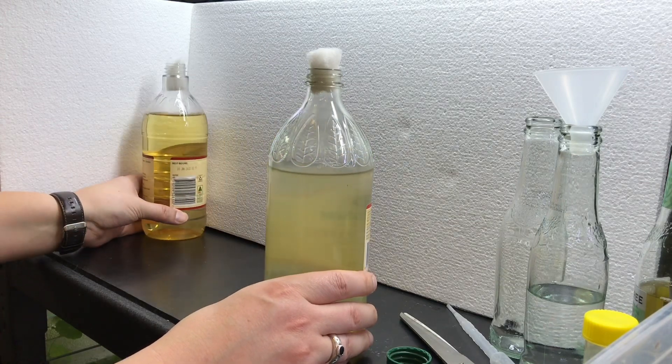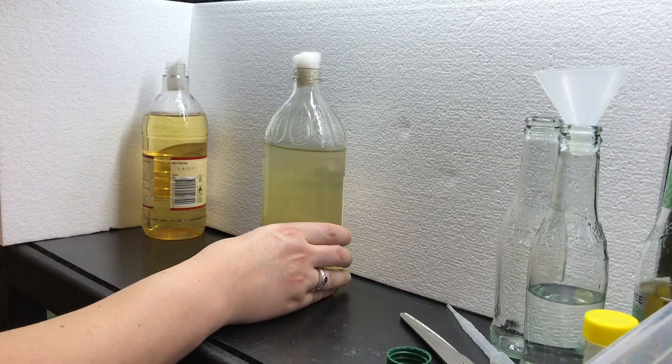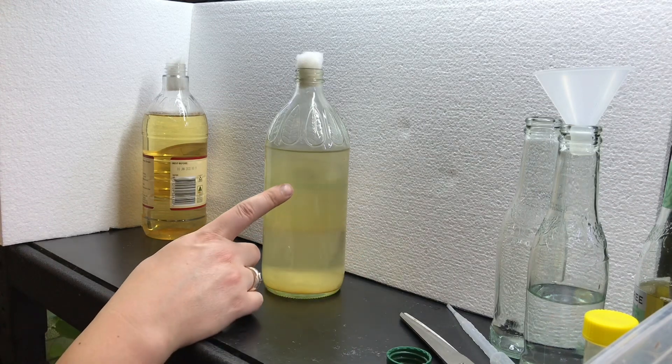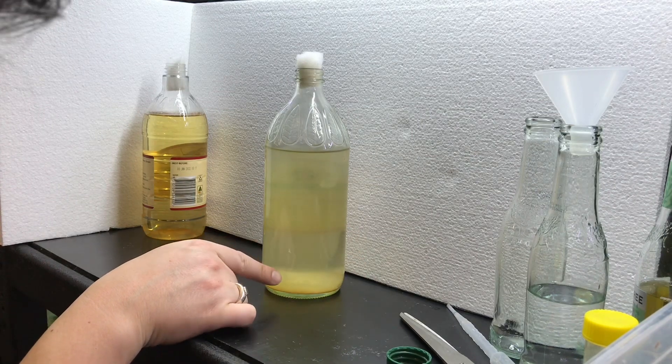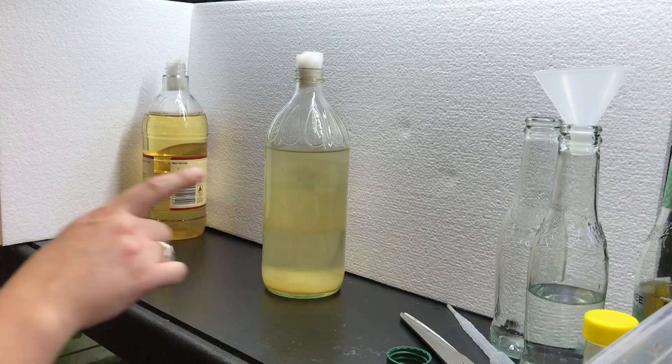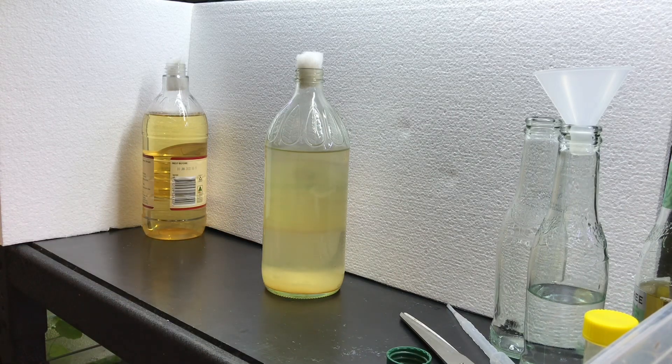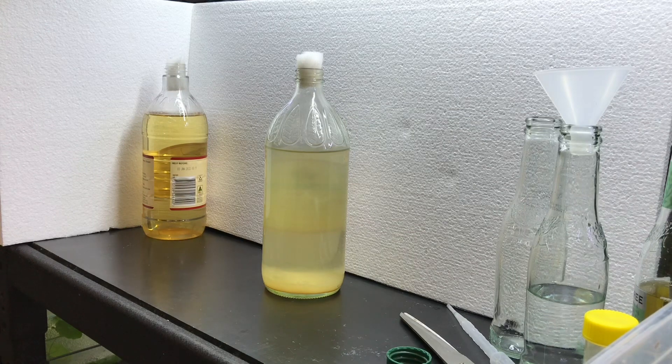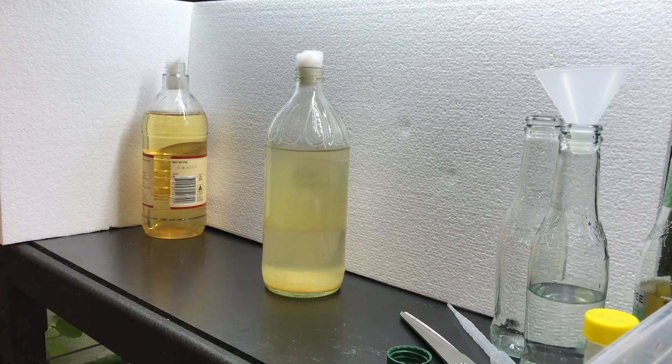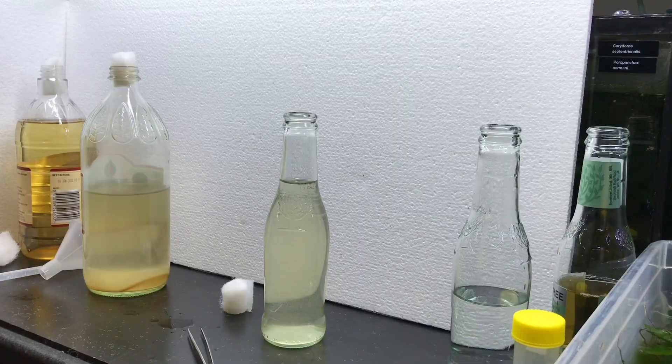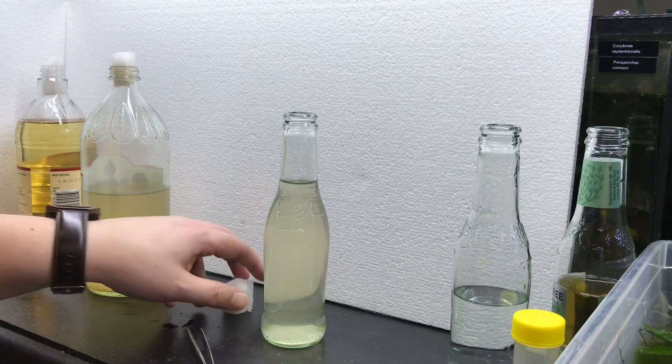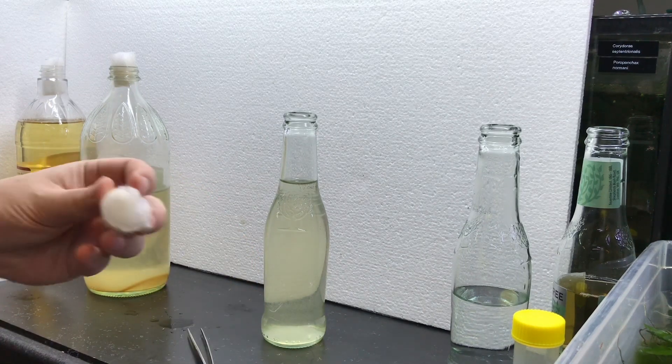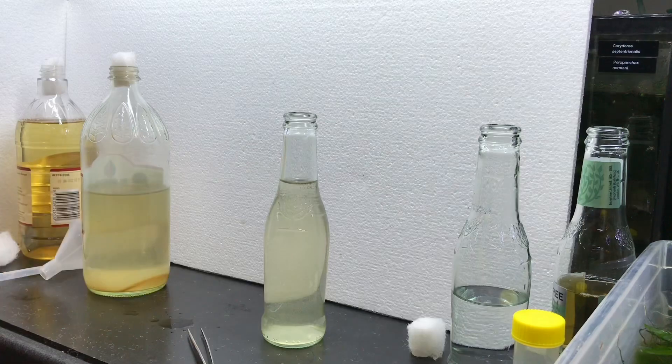So we're going to now get some vinegar eels out of the established culture. As you can see, the established culture again the color is different. There's basically the whole volume of the liquid has vinegar eels in there. There are a number of ways to get the vinegar eels out. Some people pour the contents through a coffee filter. We find that very messy.